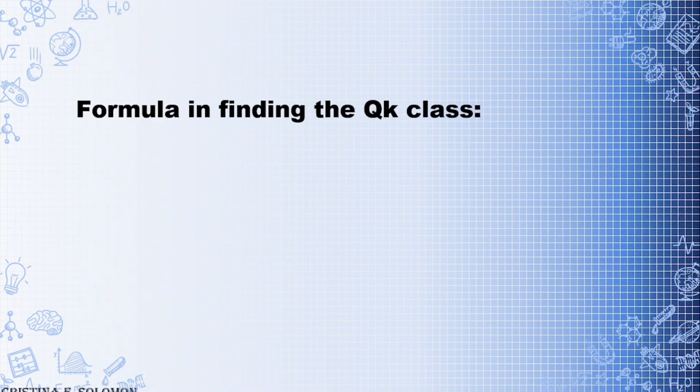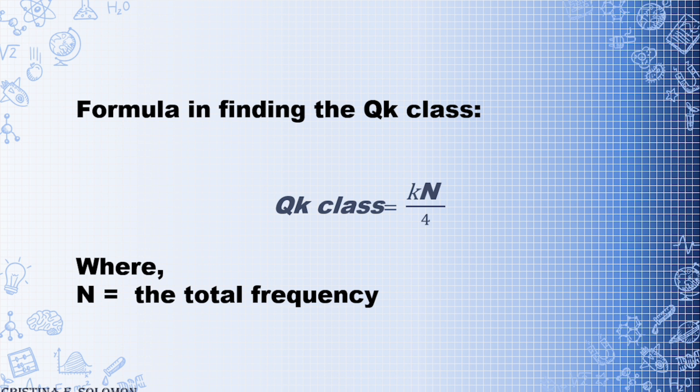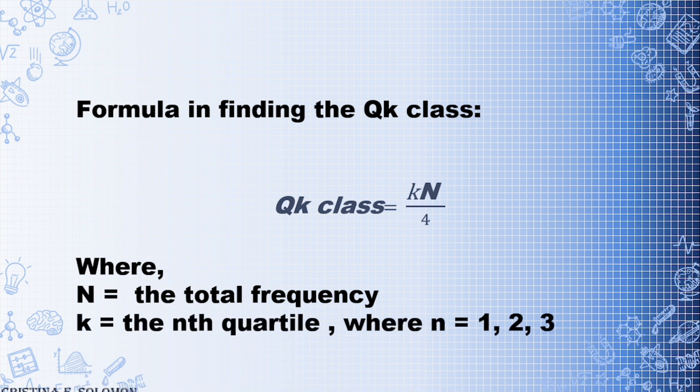Here is the formula for finding the QK class position: QK class = K × N / 4. Wherein N is the total frequency and K is the Nth quartile, where K is equal to 1, 2, or 3. This is the first step in computing the quartile, so that we know the position of our quartile in the less than cumulative frequency.